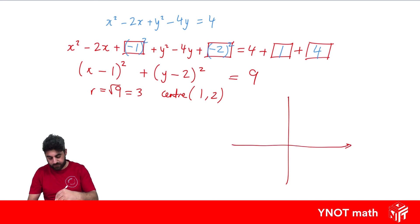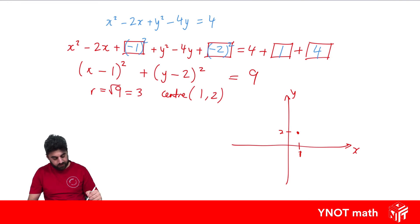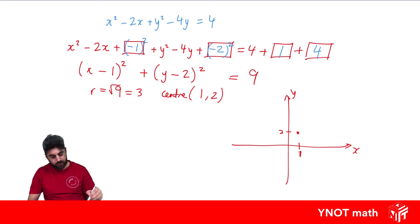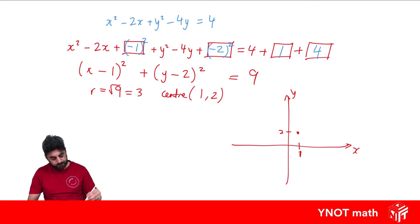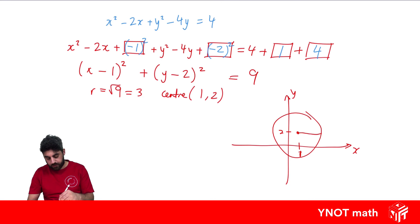Sketching this out: the center is at (1, 2) with a radius of 3. We need to be careful here — since the center is at height 2 and the radius is 3, the circle will cross the x-axis below. If the radius were only 1, it wouldn't reach the x-axis, but with a radius of 3 it does cross it.